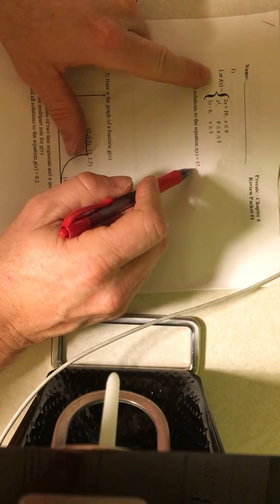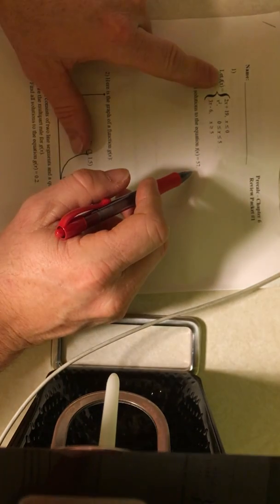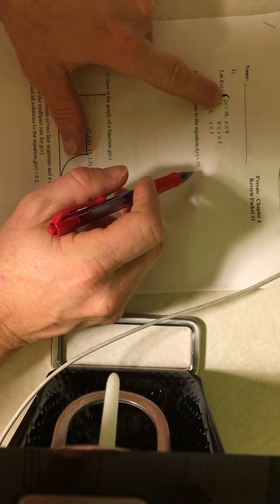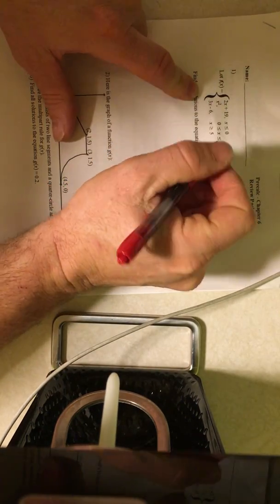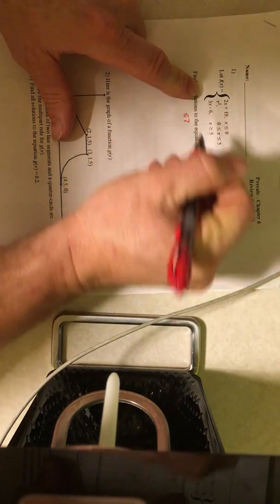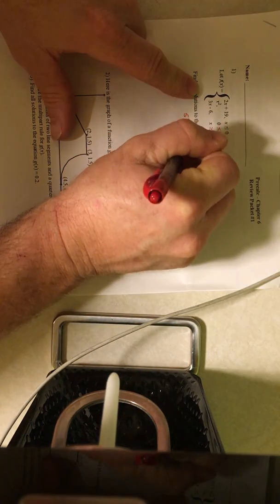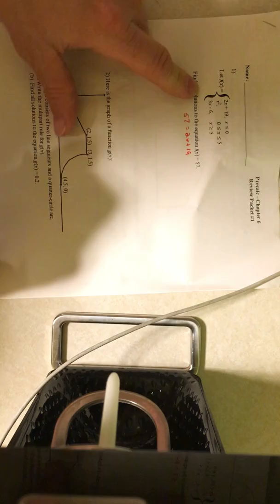Find all solutions in the equation f of x equals 57. So we're going to let 57 equal this multi-part function, this piecewise function. So I can test it. Does 57 equal 2x plus 19?